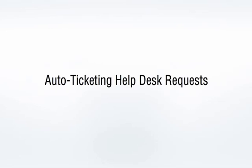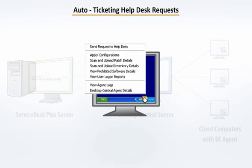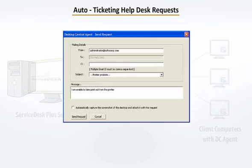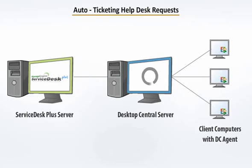Let us first understand how Auto Ticketing works. Desktop Central allows users to submit help desk requests from the Desktop Central icon in the system tray. When a user submits a request, it first reaches the Desktop Central server. The Desktop Central server processes the request and sends it to the Service Desk Plus server for creating a ticket.